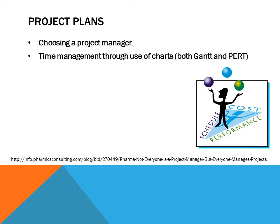Finally, we have project plans. This begins with choosing a project manager, who is in charge of making sure the project goes smoothly, that all time requirements such as deadlines are met, and that all project goals are achieved. Time management can be handled through the use of charts such as Gantt and PERT. With these charts, you're able to make sure you're on schedule and meeting all project goals at specific times. Project plans are the final step of the analysis stage.